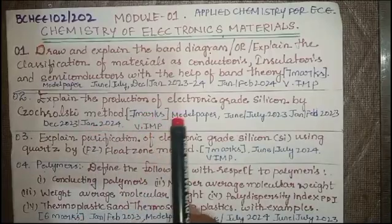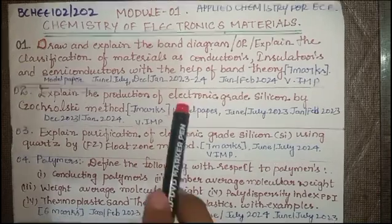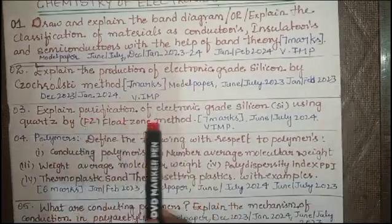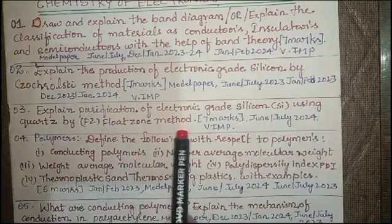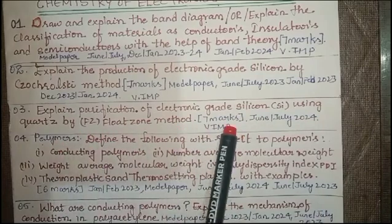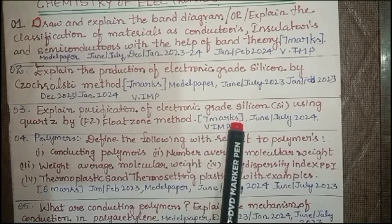Question 3: explain purification of electronic grade silicon using quartz by float zone method. This is one of the most important questions that have been asked for seven marks.